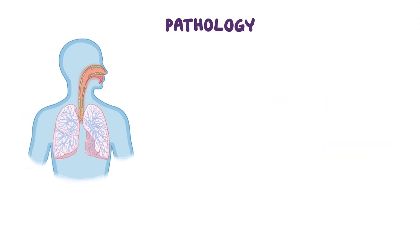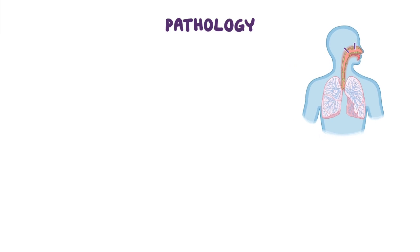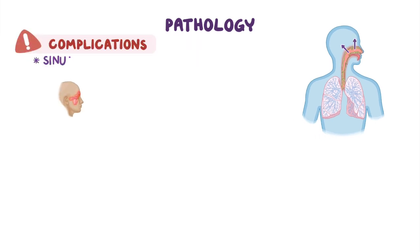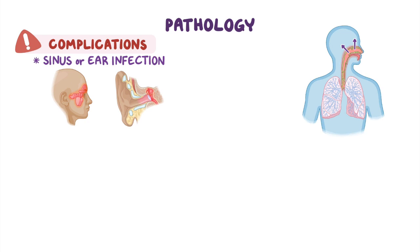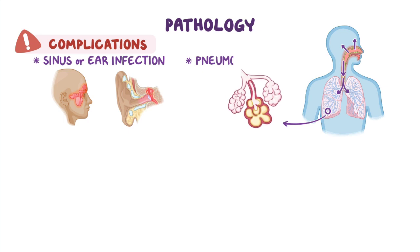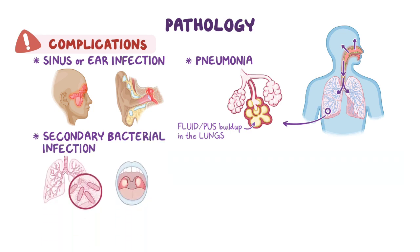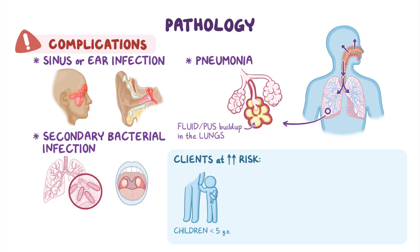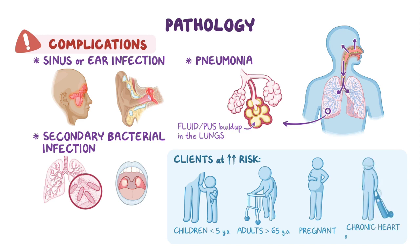In certain cases, the disease can become more severe and spread to nearby areas, leading to complications like a sinus or ear infection. If the virus manages to invade the lower respiratory tract, clients can potentially develop pneumonia, characterized by fluid or pus buildup in the lungs. In addition, the disease may weaken the immune system, making the individual more susceptible to contracting a secondary bacterial infection. Clients at higher risk of developing complications include children under five years of age and adults over 65, as well as clients who are pregnant or have a chronic heart or lung disease.